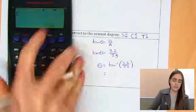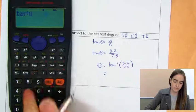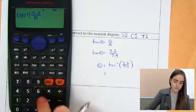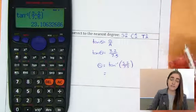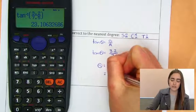And we'll pop that in our calculator. And to the nearest degree, that would be 23 degrees.